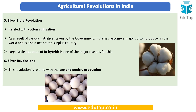The fifth revolution is the silver fiber revolution, related to cotton cultivation. India has become a major cotton producer and a net cotton surplus country. BT hybrid cotton is now grown in India, and cotton is the only genetically modified crop grown at a commercial level in India — GM seeds have played a very important role in this revolution. The silver revolution, by contrast, is related to eggs and poultry, and is a more recent revolution.